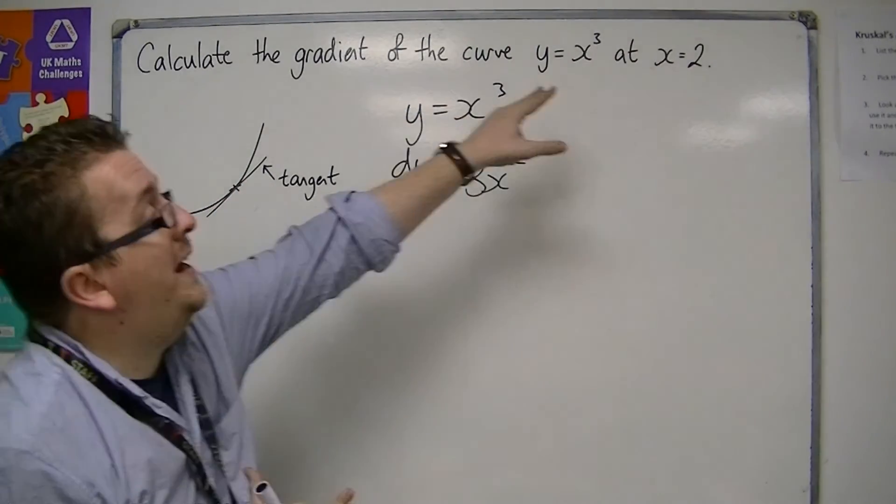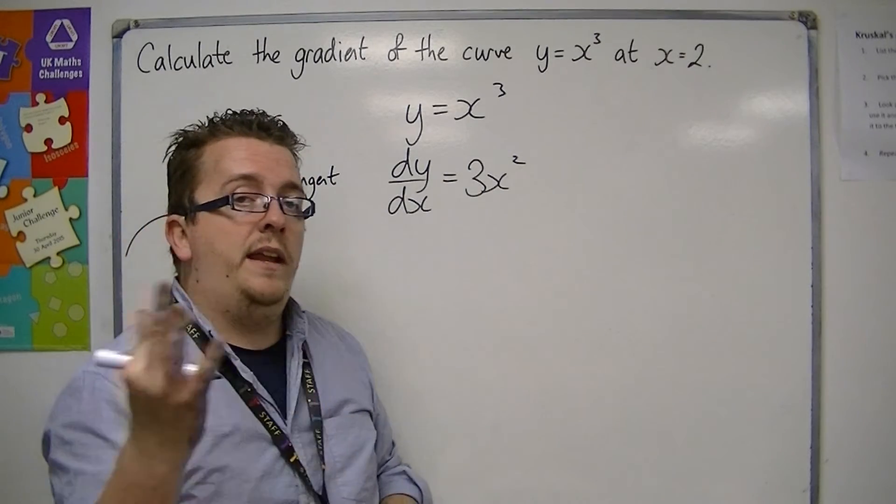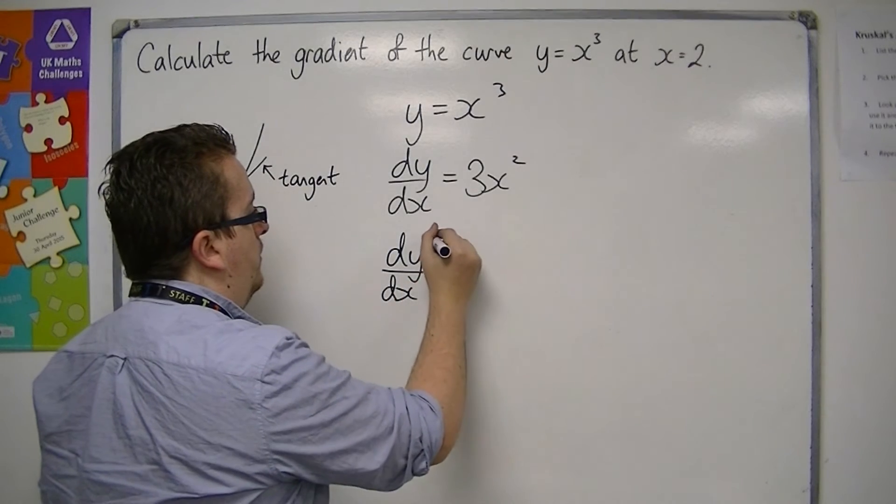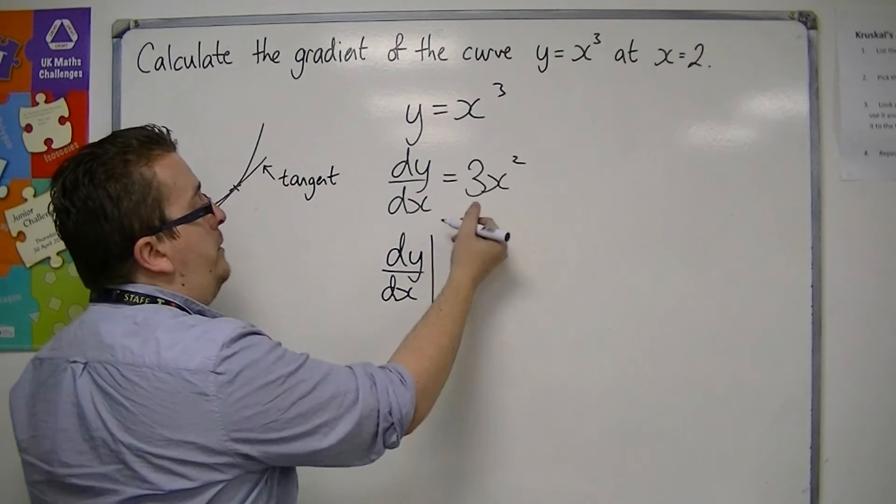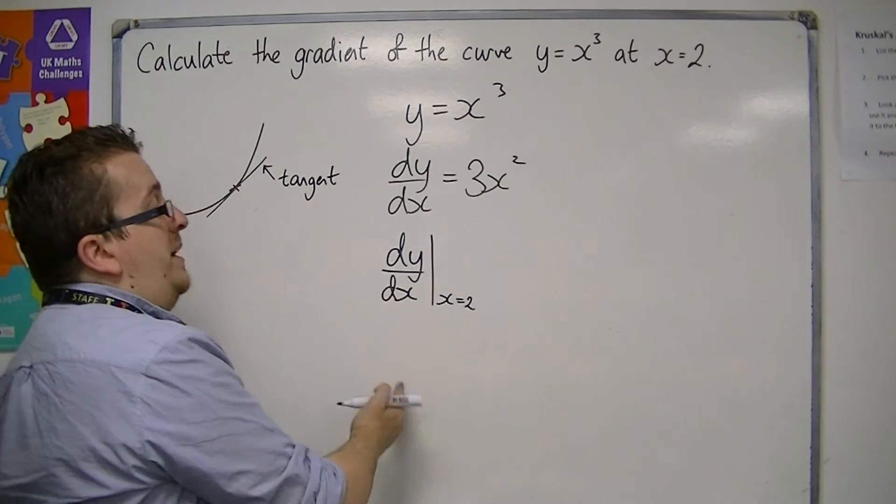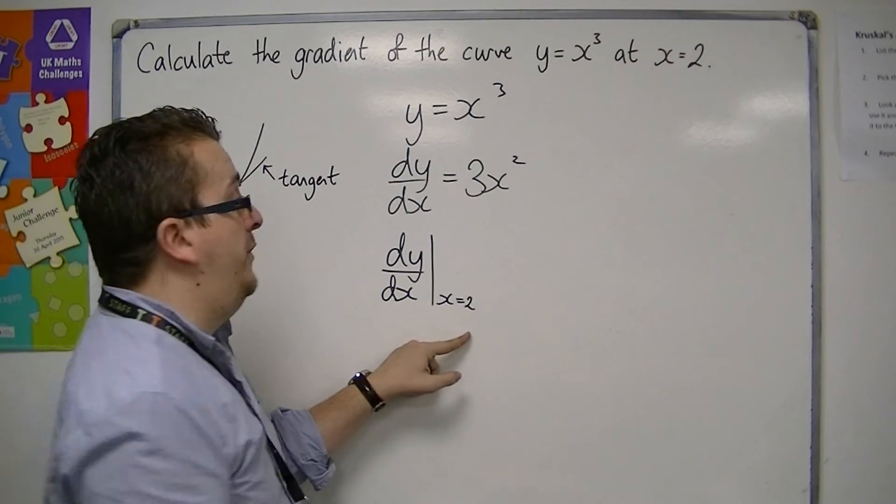And then we're going to evaluate it at x equals 2. Now, I prefer the notation, you may or may not have seen it before, where we draw a line and then put x equals 2 at the bottom. So this is telling me to evaluate dy by dx at x equals 2.